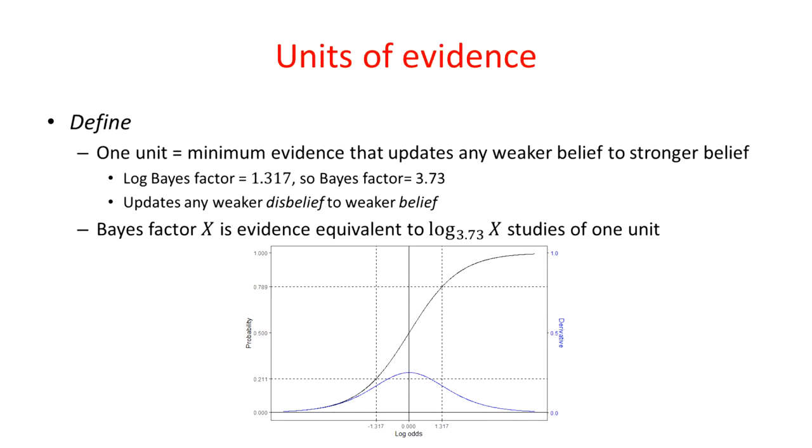So that is weaker and stronger belief. Now let's define one unit of evidence to be the minimum evidence that updates any weaker belief to a stronger belief. In other words, a log Bayes factor of that same value, 1.317, so a Bayes factor of 3.73.